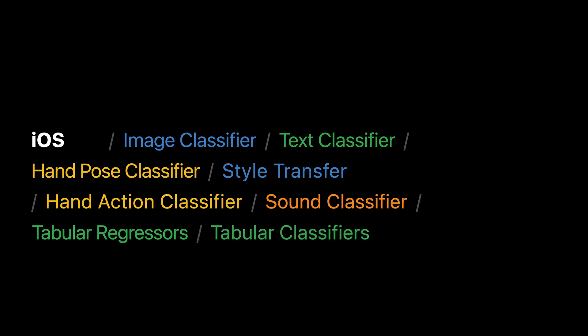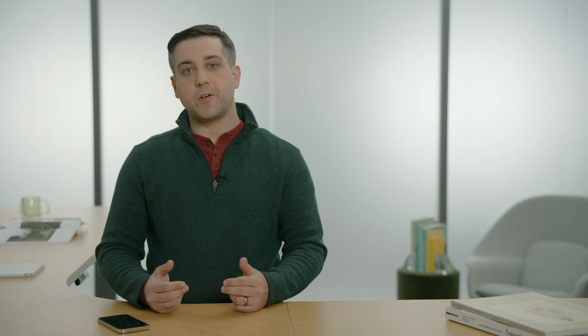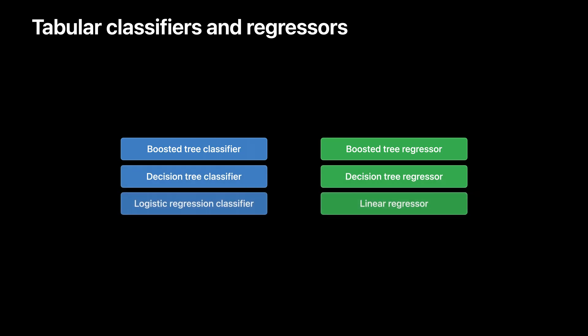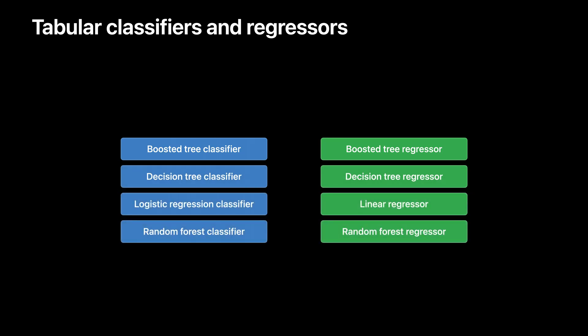Let's walk through an example of how these could create a more dynamic app experience. A classifier learns to predict particular classes from data in a training dataset. Here are the APIs for training classifiers and regressors from general tabular data, allowing them to be used in many different scenarios.